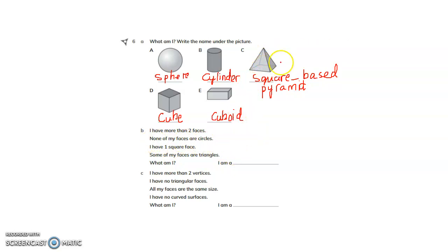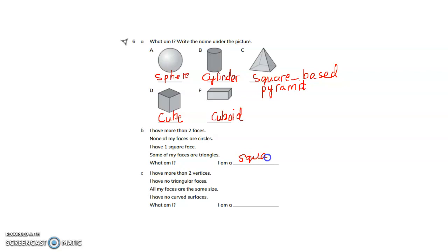None of my faces are circles. I have 1 square face — the base is a square. Some of my faces are triangles — the side faces are triangles. So, what am I? I am a square-based pyramid.